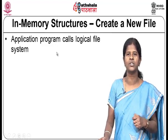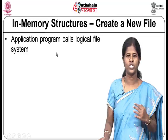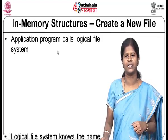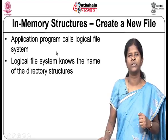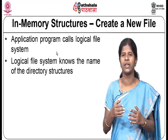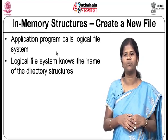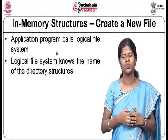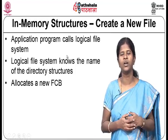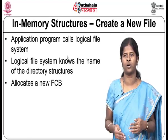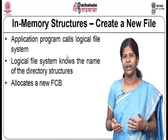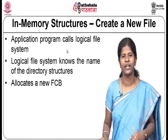When a new file is created, the application calls the logical file system. The logical file system knows the directory structure and identifies the parent or current directory where the file should be created. It allocates a new file control block for the new file — in Unix, this is an inode. A new inode is allocated for the new file.